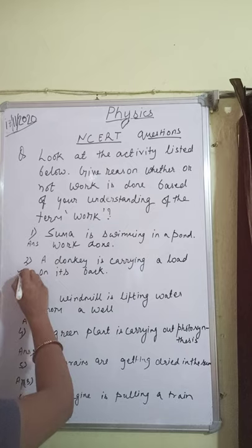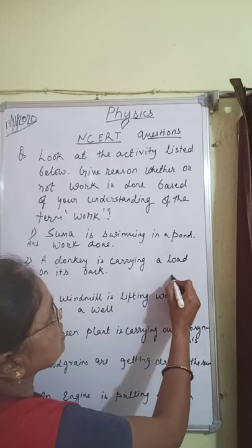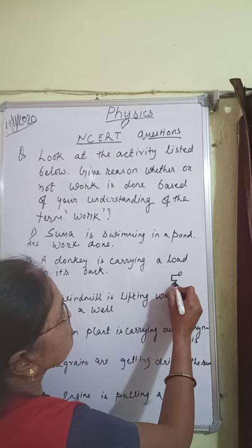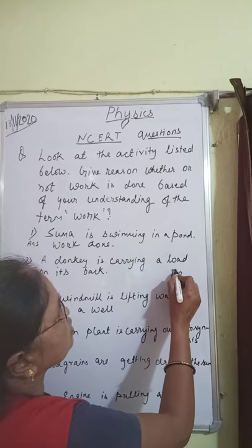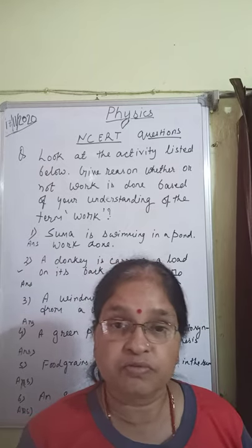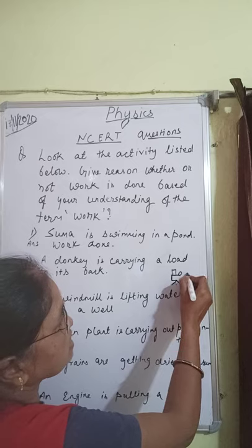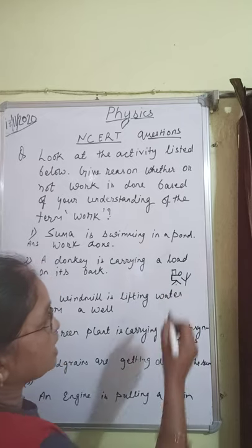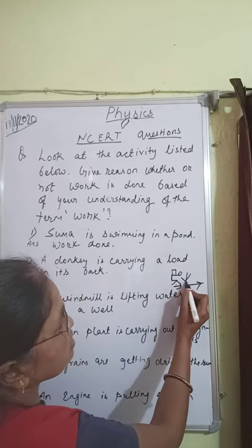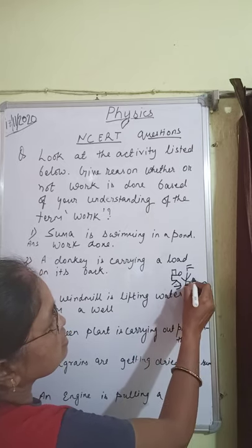Second question: A donkey is carrying a load on its back. The load's weight is acting downwards, and the donkey is moving forward. The angle between force and displacement is 90 degrees.